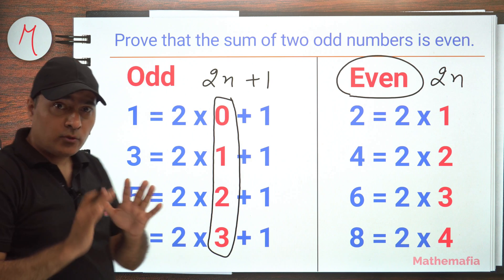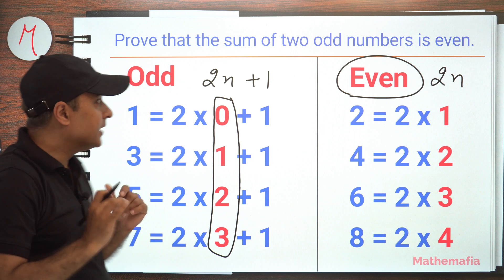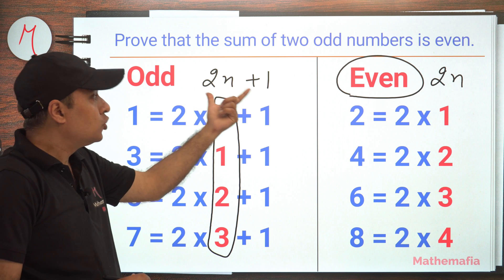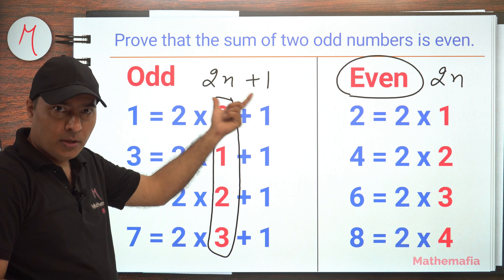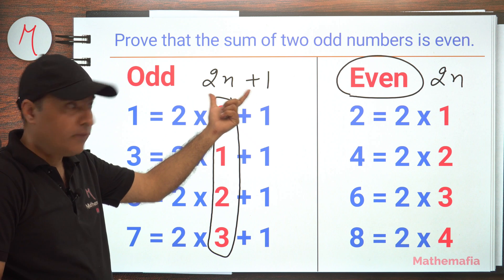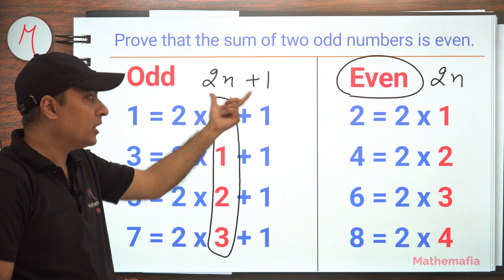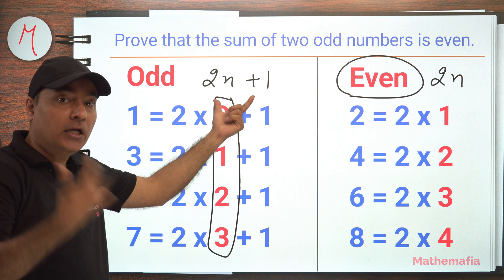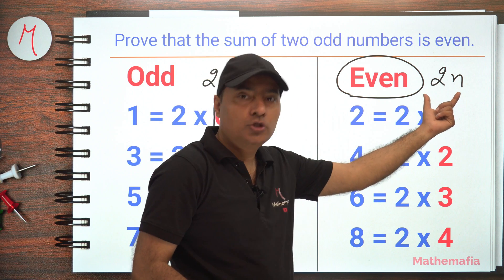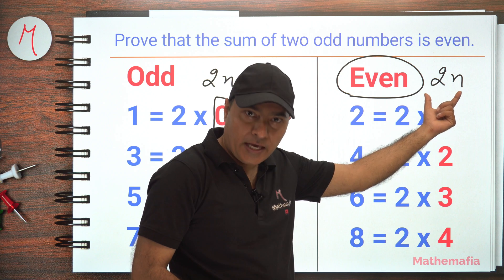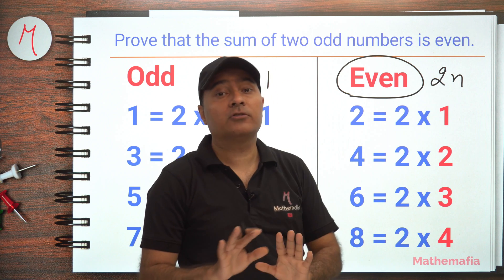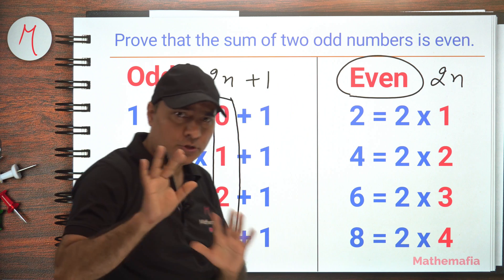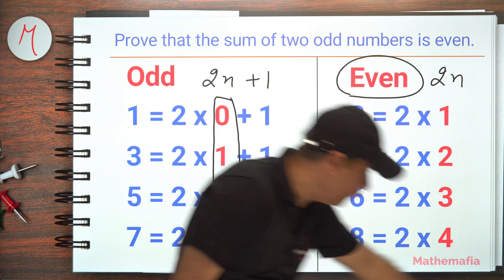So what we have to prove now is that if we add two such numbers — two odd numbers — we get a number which is of the form 2n. That's what we have to prove. So let's start the proof.